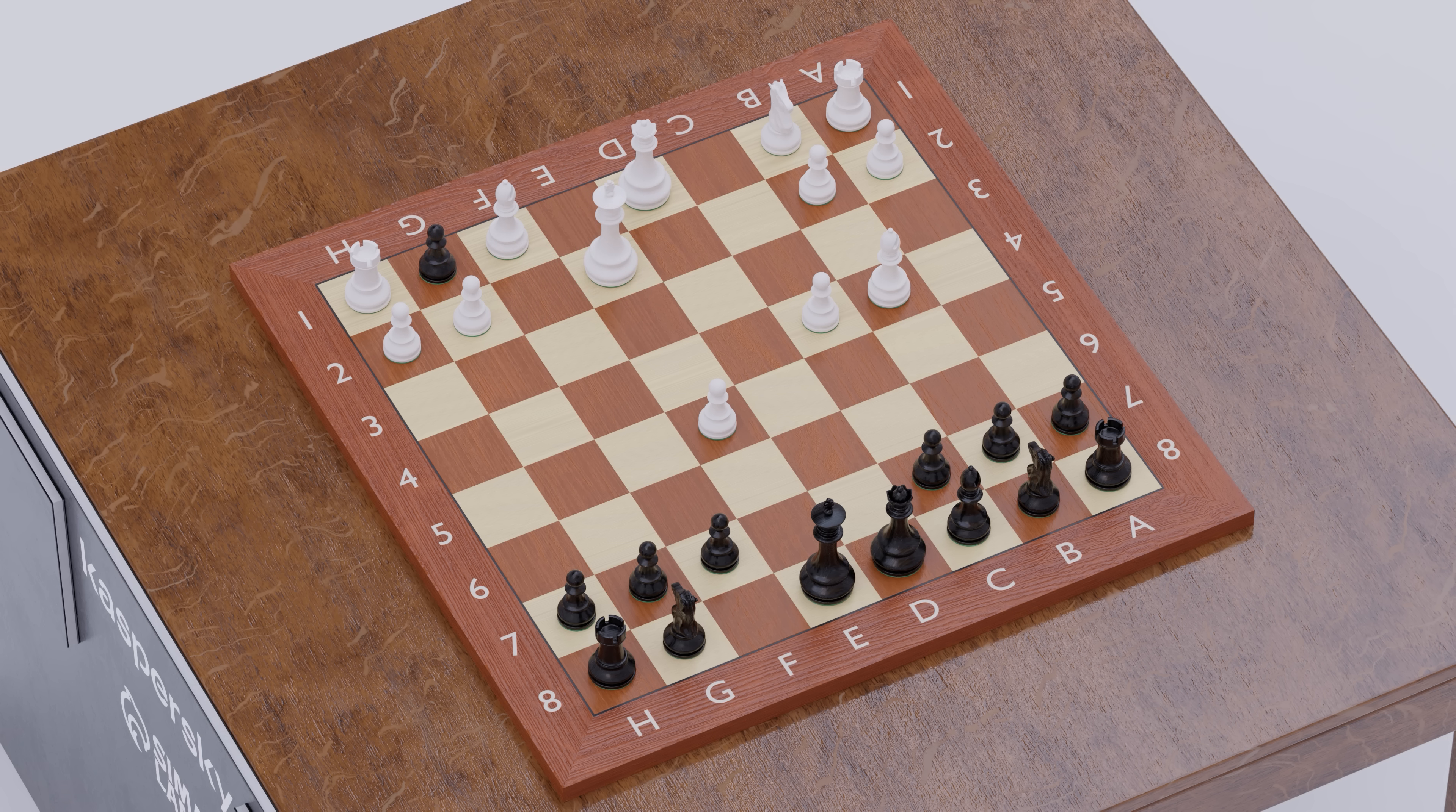We will now underpromo to a Knight so that check is delivered, denying any chance of defense. Rook captures on G1 is not possible as this would allow Bishop to G4, skewering the King and Queen. White once again must move the King.